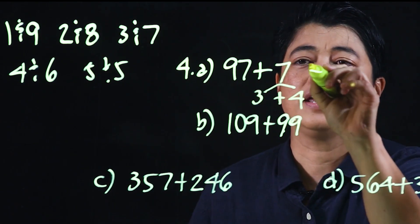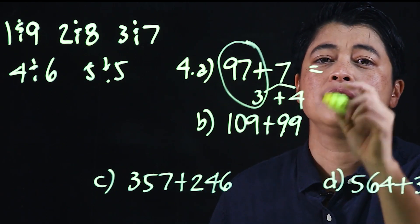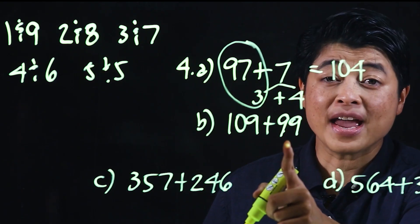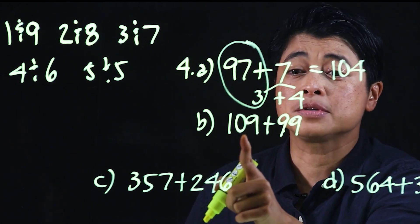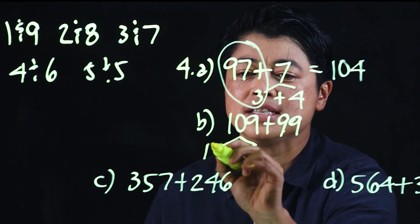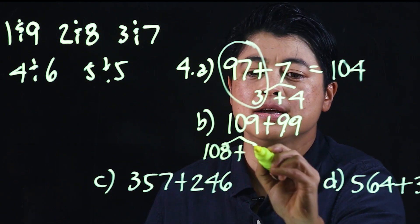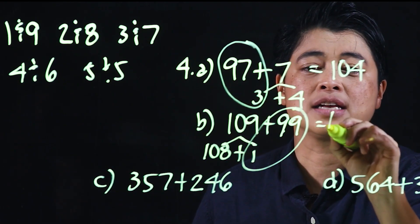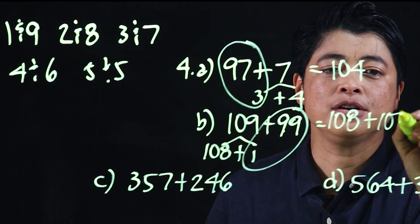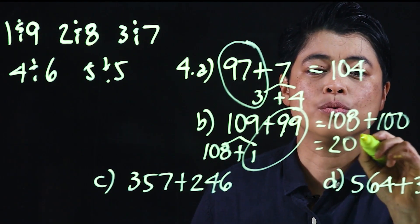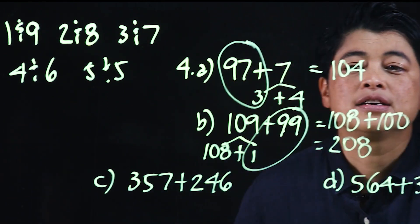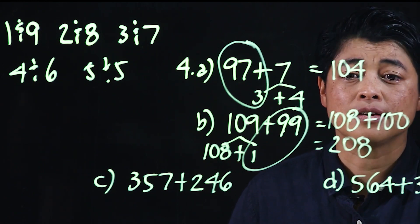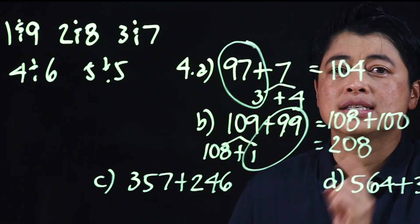And therefore this is 100 plus 4, makes it 104. Here we have the option of just taking 1 from here to make this 100, so this is 108 plus 1 making 100, which means that's 108 plus 100 makes it 208. So clearly this is mental addition because we didn't have to rewrite vertically, it's just a single place value addition.